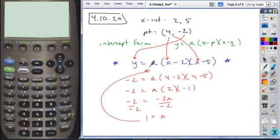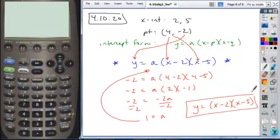So we just plug that right back in, and we get our whole equation, y equals 1 you don't need to write, so just x minus 2 times x minus 5, and that would be our answer.